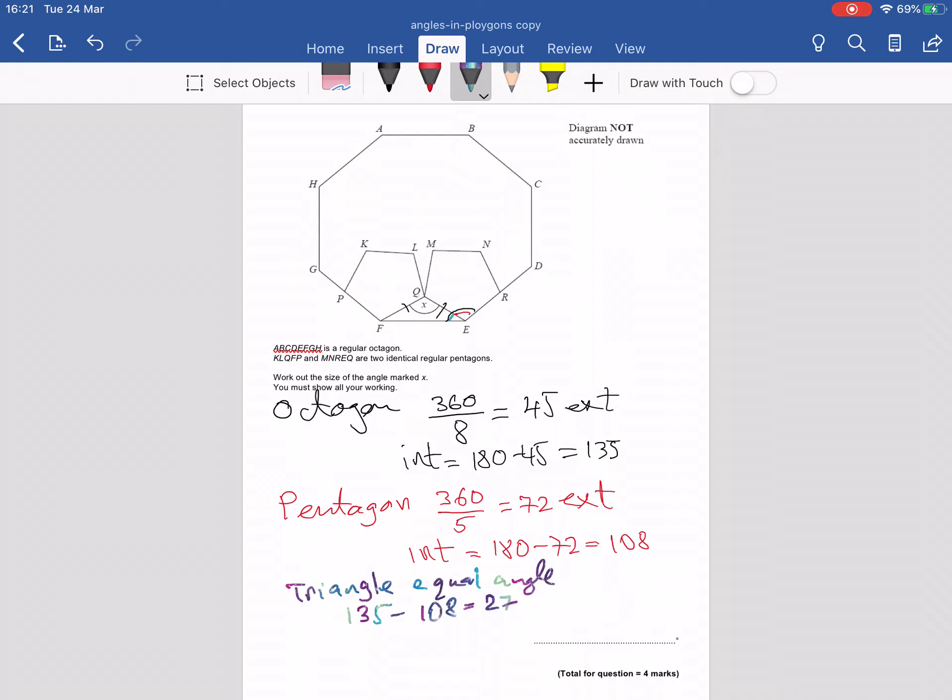So what that means is that this one here and this one here, they're 27. So to work out my angle X, I'm going to do 180 minus the two 27 degree angles. And I'm going to do that in my calculator. And I'm getting that is 126.